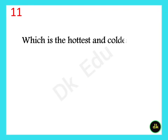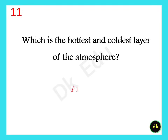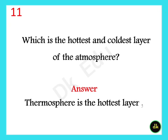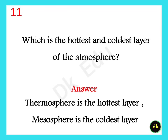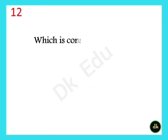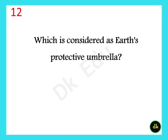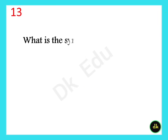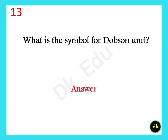What is the hottest and coldest layer of the atmosphere? The Thermosphere is the hottest layer and the Mesosphere is the coldest layer. Which is considered Earth's protective umbrella? The ozone layer. What is the symbol for the Dobson unit? DU.